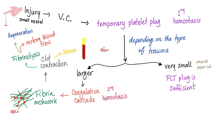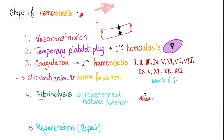The function of platelets: when I injure myself, first I vasoconstrict to decrease blood loss, then platelets come to form a plug — primary hemostasis. Then coagulation factors form a clot — secondary hemostasis. After the clot forms, it traps red blood cells, contracts serum, and then we dissolve the clot to restore normal function. Steps: vasoconstriction, platelet plug (primary hemostasis), coagulation or clot (secondary hemostasis), fibrinolysis, then regeneration.